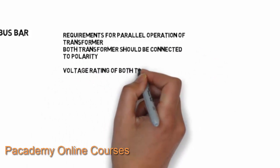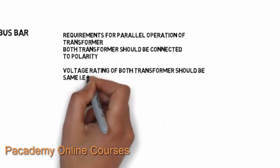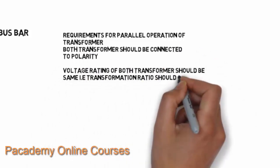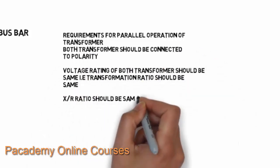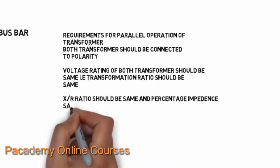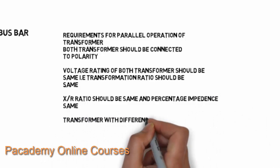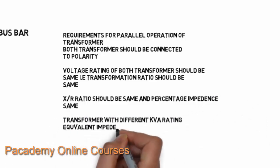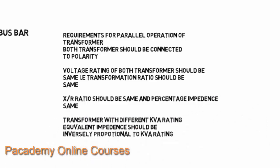The requirements for parallel operation of transformers include that both transformers should be connected with correct polarity — the primary and secondary windings should have the same polarity. Also, the voltage rating of both transformers should be the same, meaning the transformation ratio should also be the same.